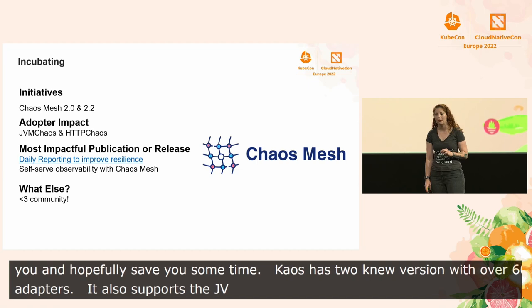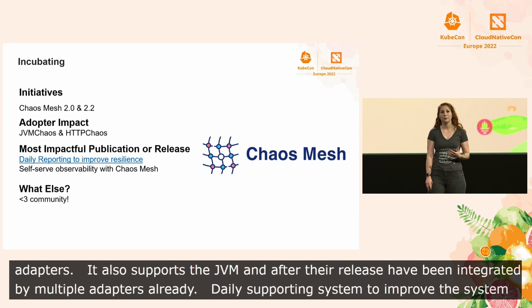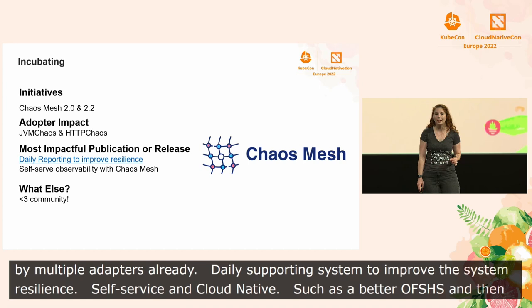The Chaos Mesh team is developing a daily reporting system to improve system resilience. A lot of these changes within Chaos Mesh show the possibility of self-service and cloud native, such as when an adopter built their own application for better observation using Chaos Mesh and then wrote a tutorial on it. This is exactly the type of community they were hoping to build.